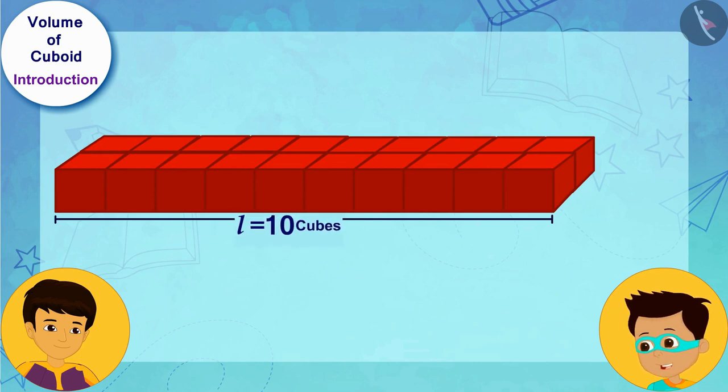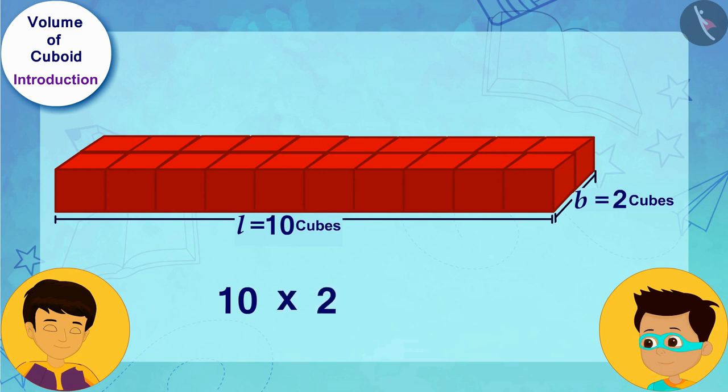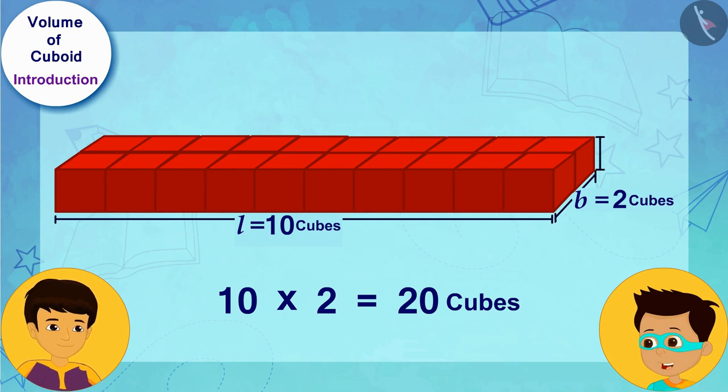That means 10 times 2, 20 cubes are at the base of this cuboid. And see, its height is equal to the length of the cube. Thus, there are 20 cubes in this cuboid box.